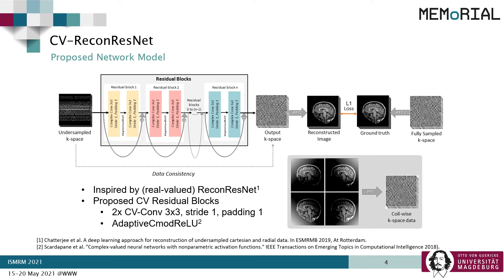We are proposing a complex-valued ReconResNet model, which contains a series of complex-valued residual blocks. Each block contains two complex-valued convolution layers separated by an adaptive complex modulus ReLU. Given a coil-wise undersampled k-space as input, the network provides an output coil-wise k-space. The real acquired data from the undersampled k-space is then replaced in this output k-space to force the network to focus on only the missing k-space points. An inverse Fourier transform is applied on this final k-space to obtain the reconstructed image, which is compared against the ground truth using the L1 loss and minimized using the Adam optimizer to train the network.